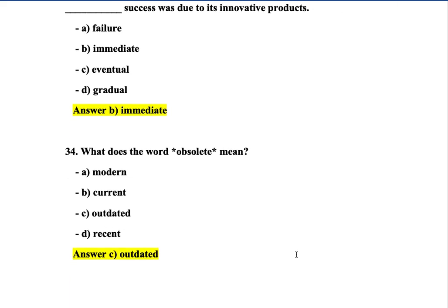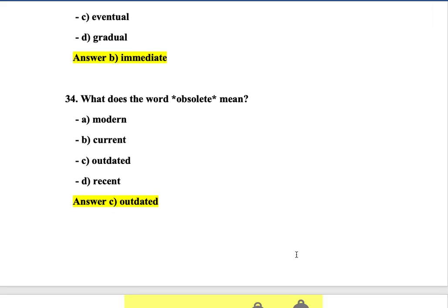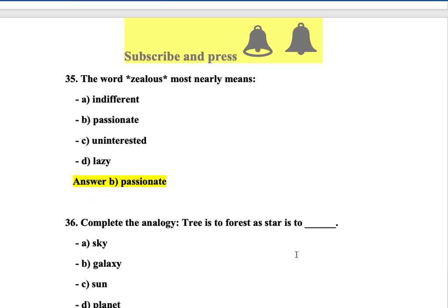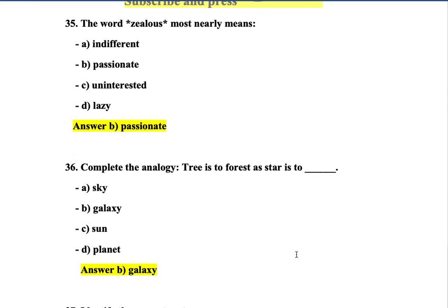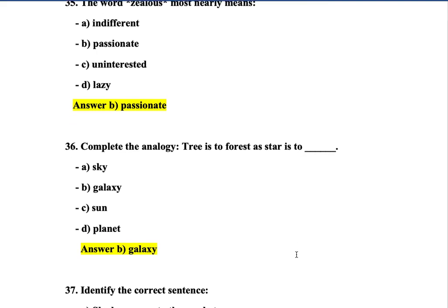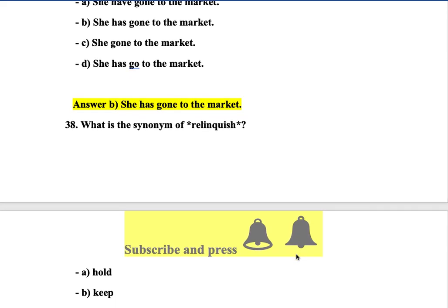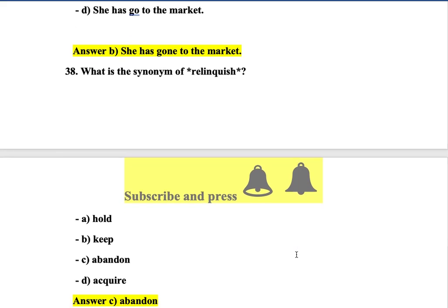Question 28: Identify the synonym of 'benevolent' — generous. Question 29: The word 'tangible' most nearly means concrete. Question 30: 'The complexity was too difficult' — option B. Question 31: Which of the following is a synonym of 'perpetual'? Perpetual means constant. Question 32: Select the antonym of 'lucid' — obscure — option B. Question 33: Identify the word that best fits in the blank: 'The company's immediate success' — option B is correct. Question 34: What does 'obsolete' mean? Outdated. Question 35: The word 'zealous' most nearly means passionate.